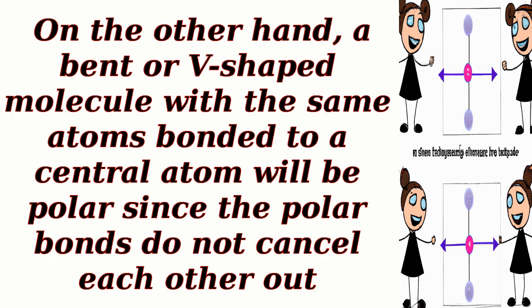On the other hand, a bent or V-shaped molecule with the same atoms bonded to a central atom will be polar since the polar bonds do not cancel each other out.